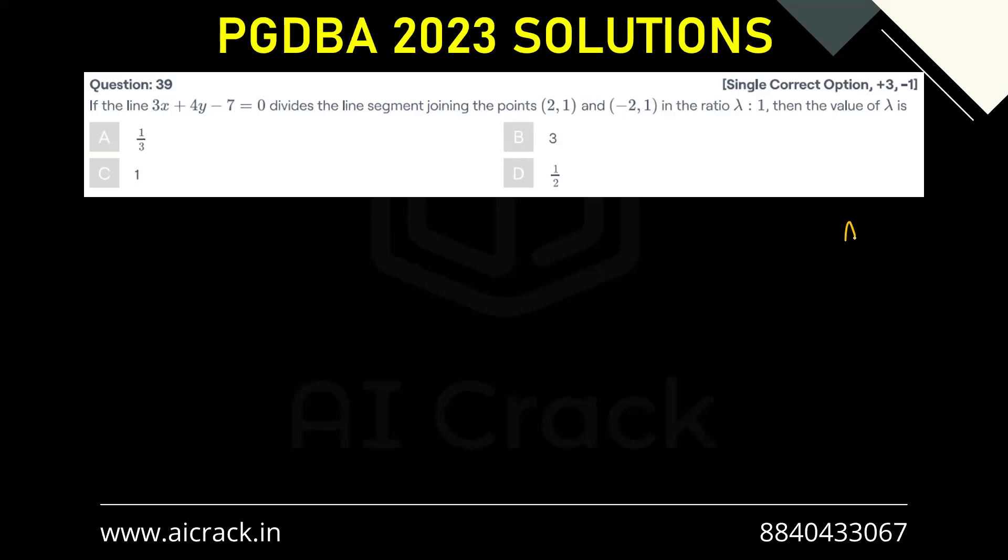Let's say this point is A and this point is B. Point A is (2,1) and point B is (-2,1). And there's a line 3x plus 4y minus 7 equals 0.